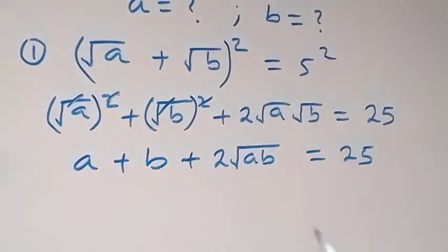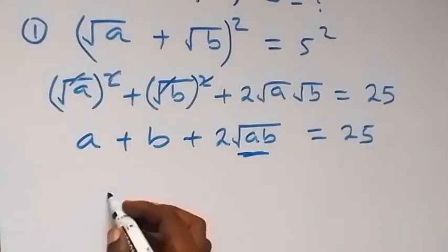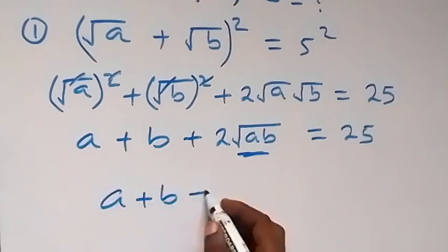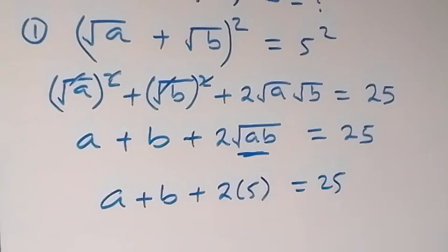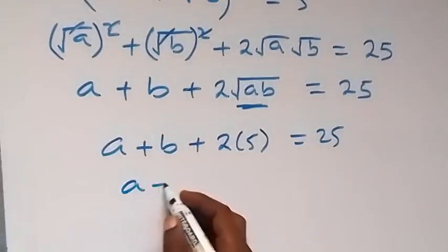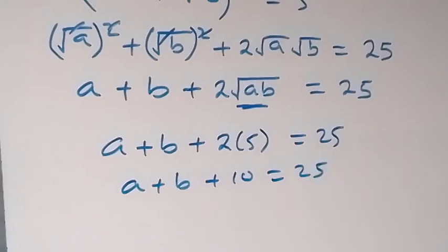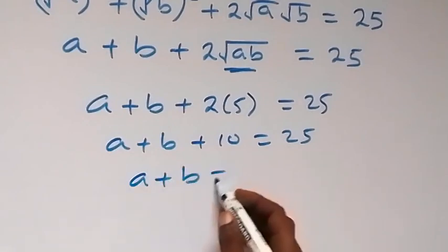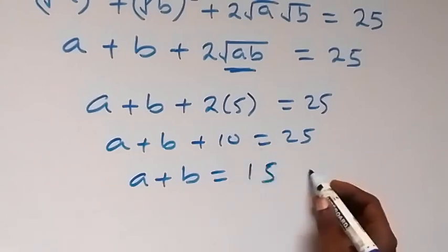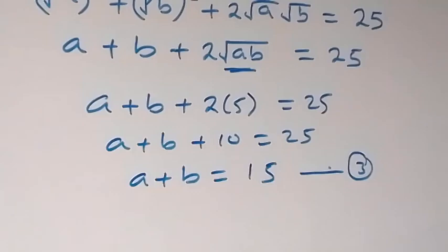Then we can substitute root AB from equation 2, which is also equal to 5, such that here we have A plus B plus 2 times 5 equals 25. So A plus B plus 10 equals 25. When we subtract 10 from both sides, we have A plus B equals 25 minus 10, which equals 15. Label this as equation 3.